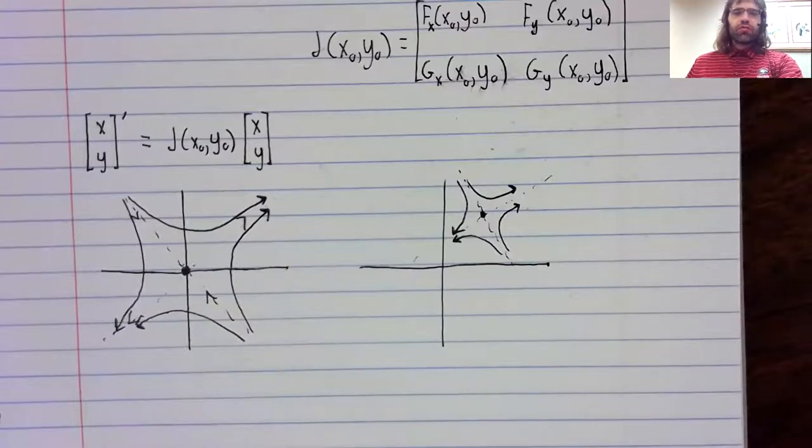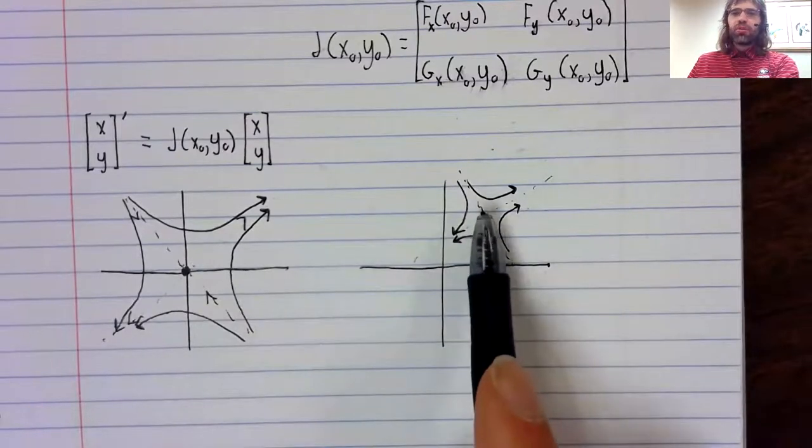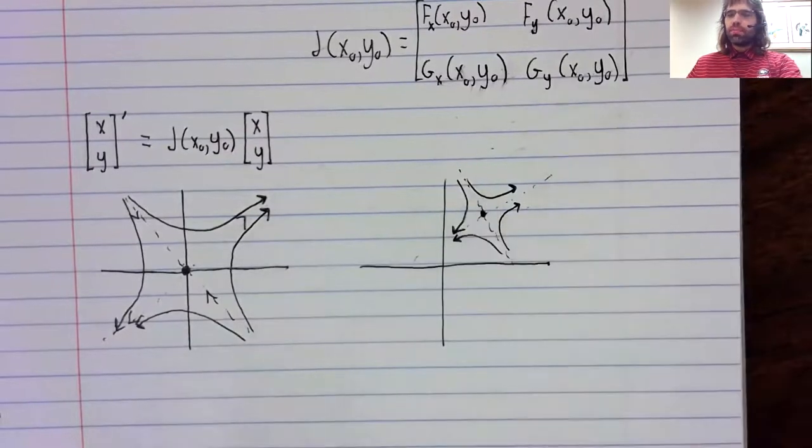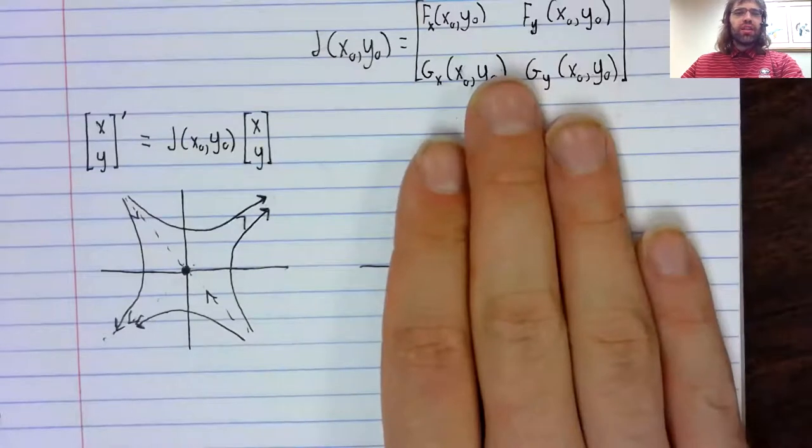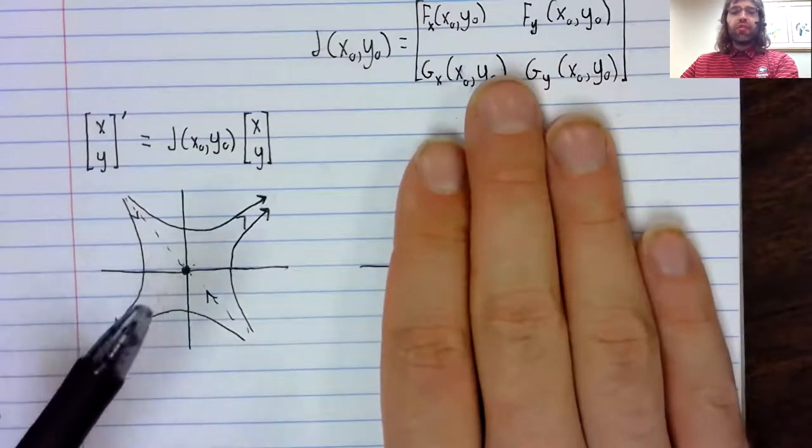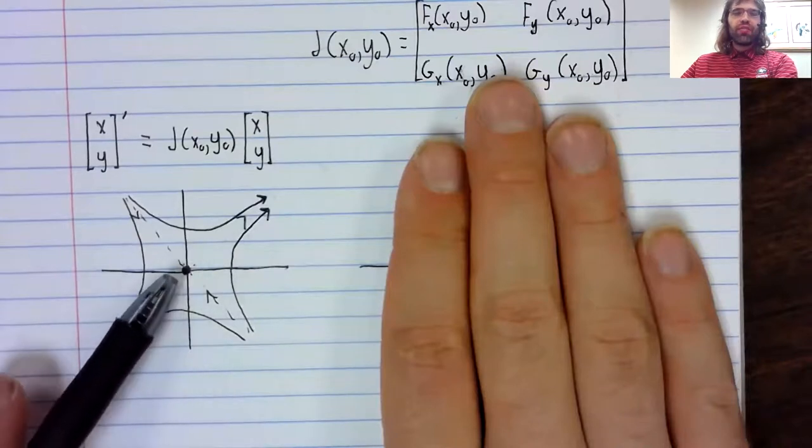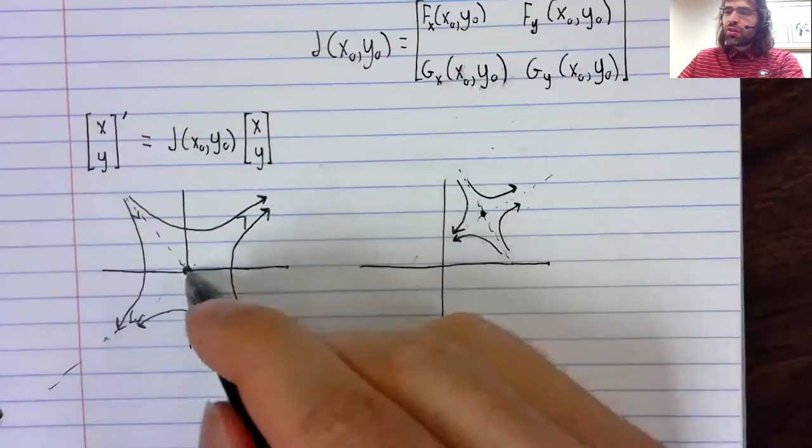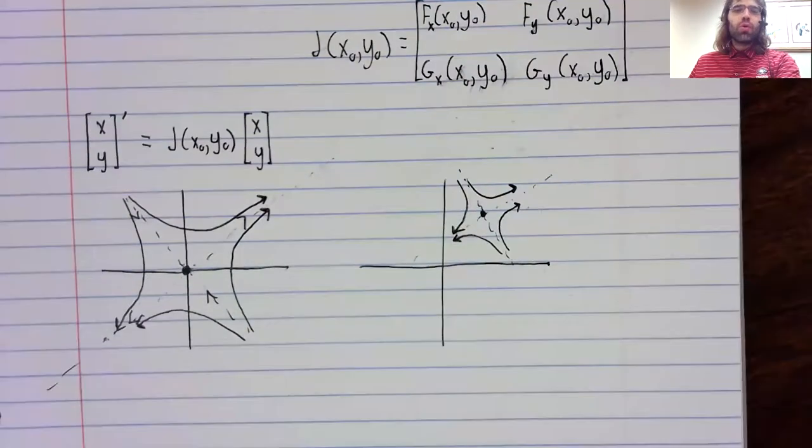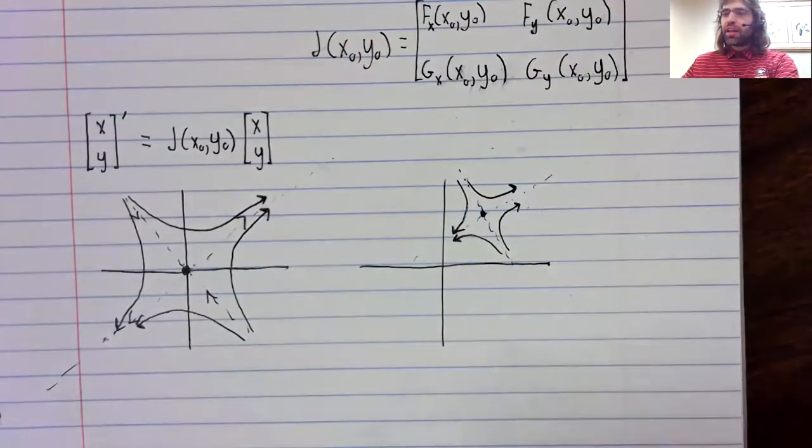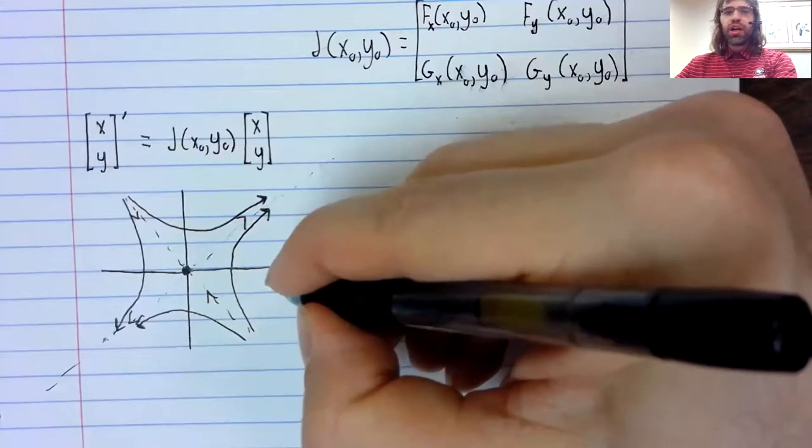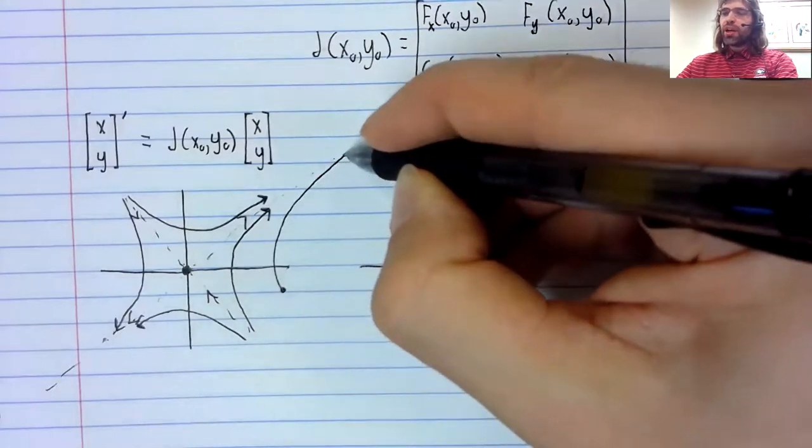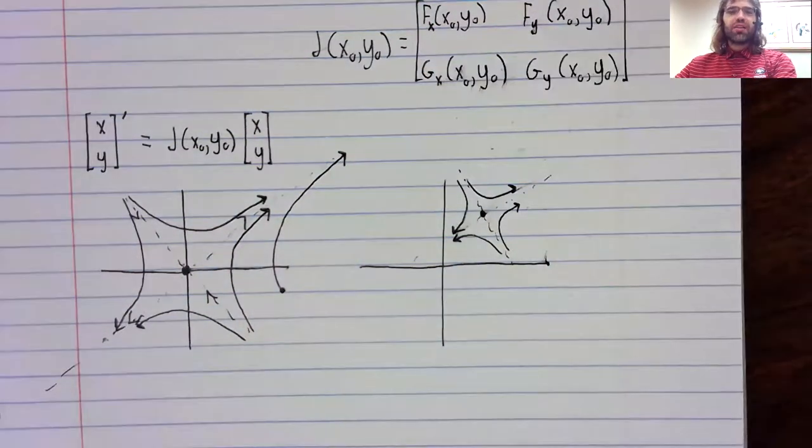The other thing we should realize is that the information we're getting about this fixed point is strictly local. So over here, this gives us the full picture of the phase plane. We have these two eigenvectors and they control everything. And no matter what your initial condition is, you know it's going to end up following one of these eigenvectors.